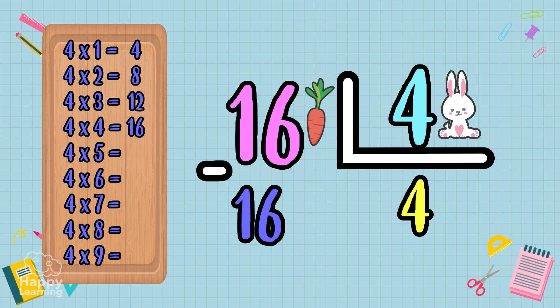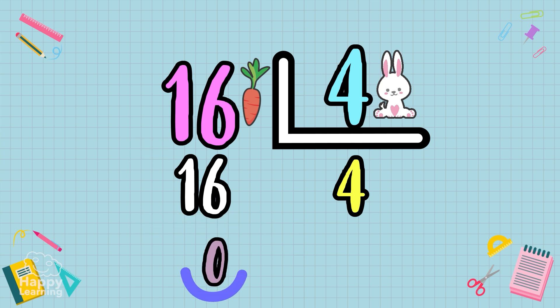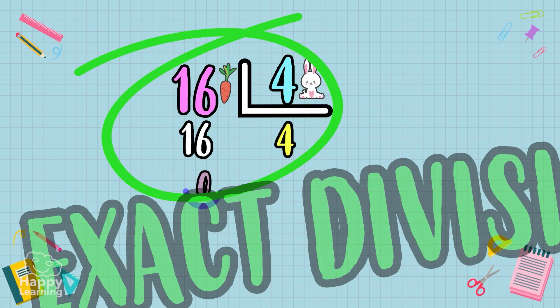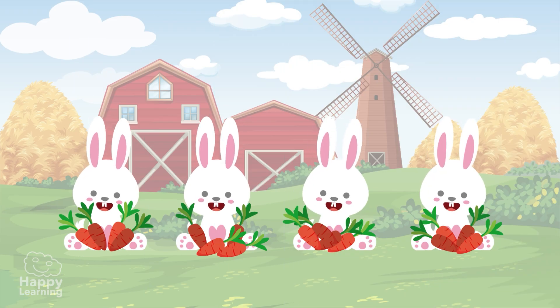We subtract 16 from 16 and as we don't have anything left over, we put a zero. So 16 divided by 4 equals 4, and we don't have any carrots left over. The division is exact.